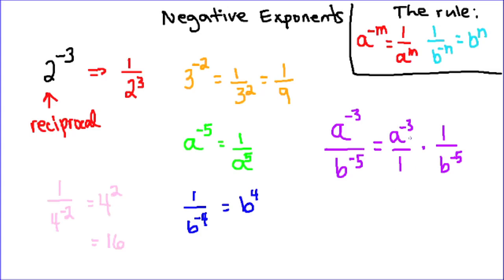And if you remember your multiplying fractions rules, really a to the power of negative 3 times 1 is a to the power of negative 3. And 1 times b to the power of negative 5 is b to the power of negative 5. So let's apply our rule to both of these.